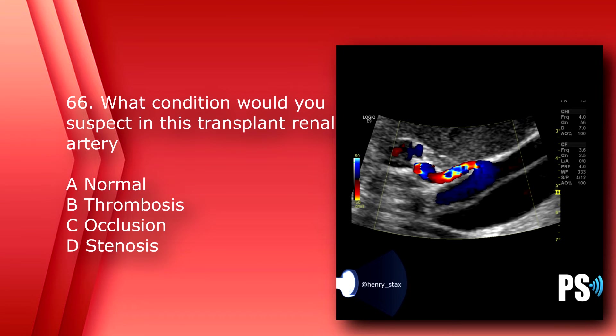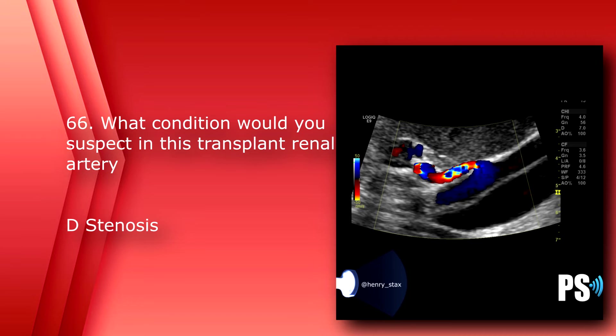Number 66: What condition would you suspect in this transplant renal artery? A) normal, B) thrombosis, C) occlusion, or D) stenosis. The answer is D, stenosis — there is aliasing in the middle of the artery.